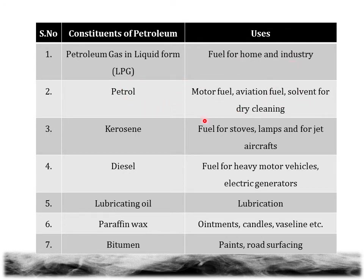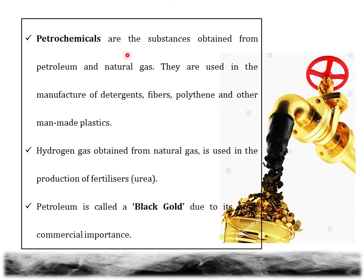Kerosene is a fuel for stoves, lamps and for jet aircrafts. Diesel is used as a fuel for heavy motor vehicles and also for electric generators. Lubricating oil is mainly used for lubricating machines or engines. Paraffin wax is used for making ointments, candles, vaseline etc. Bitumen is also a constituent of petroleum used in paints and for surfacing roads. Petrochemicals are substances obtained from processing of petroleum and natural gas, used in the manufacture of detergents, fibers, polythenes and other man-made plastics. Hydrogen gas obtained from natural gas is used in the production of fertilizers. Petroleum is called as black gold due to its high commercial importance.